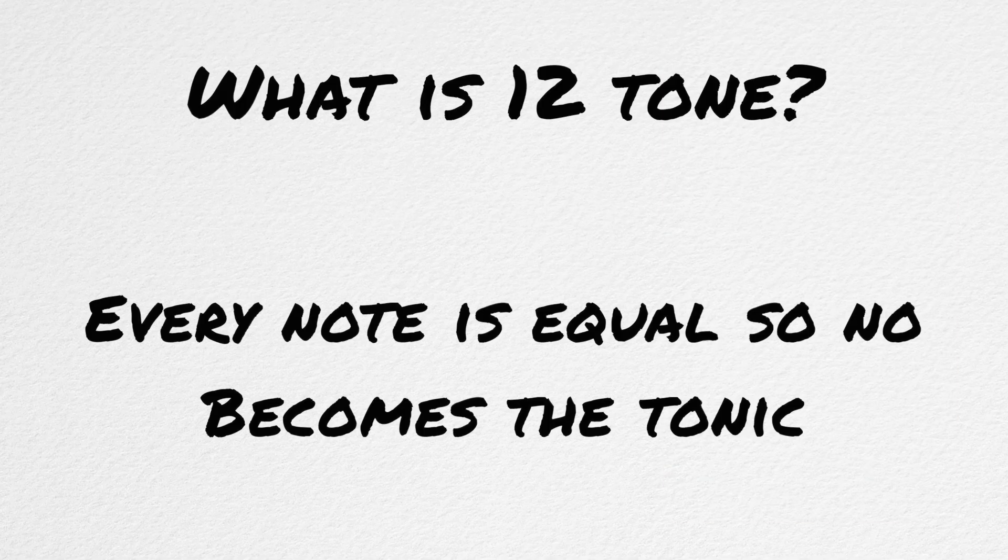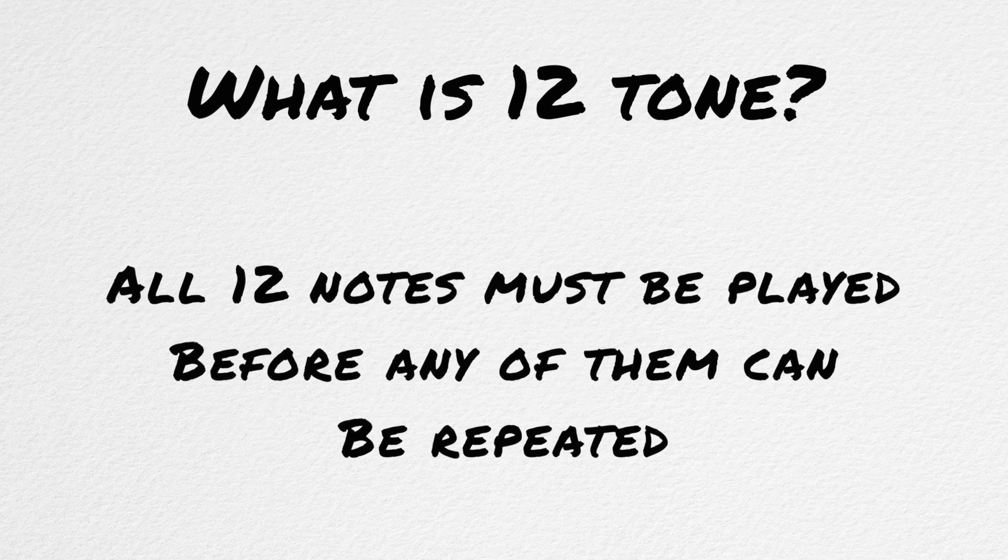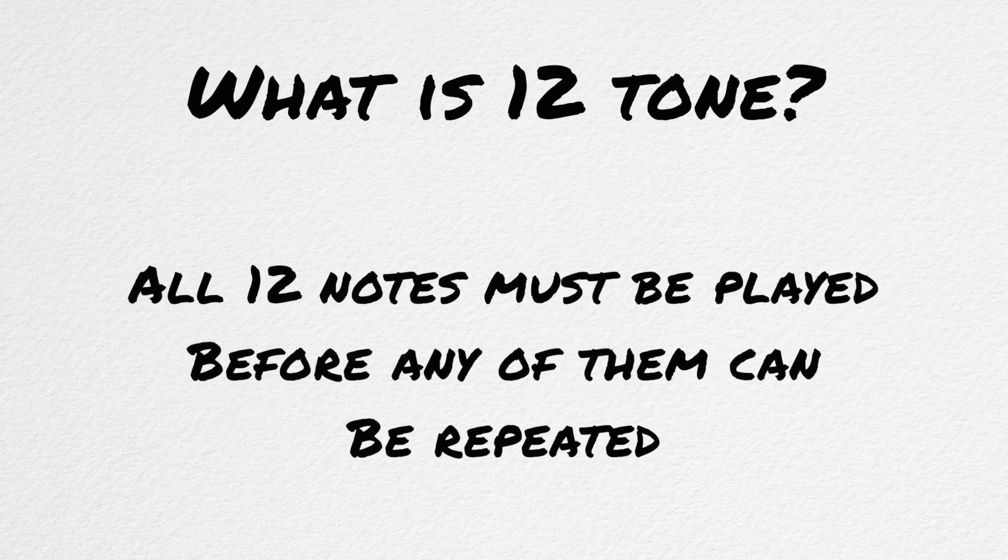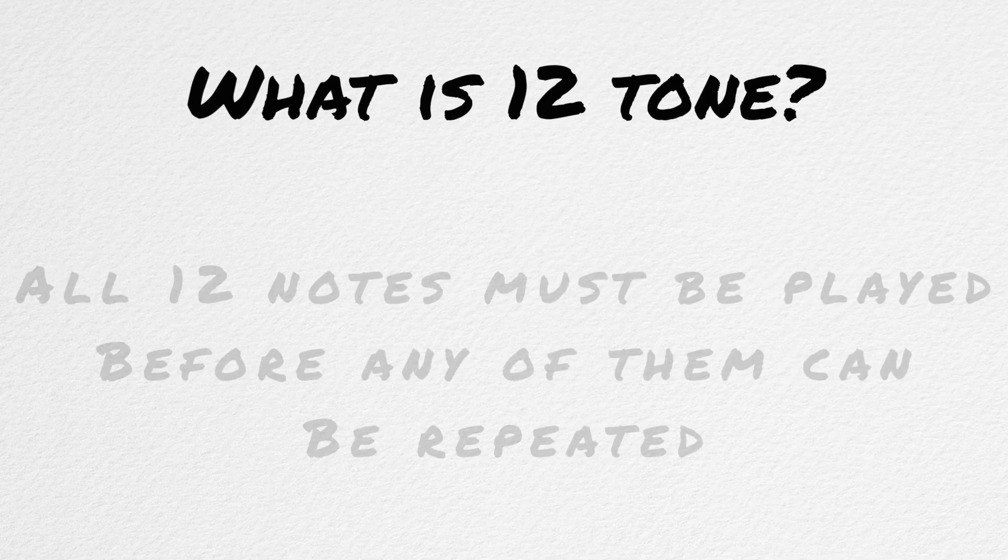What is 12-tone? 12-tone, put simply, is a system that attempts to completely avoid the thought of any one note being more important than the other. This is accomplished by creating a system that does not allow you to repeat any one note again before all 12 of the chromatic pitches have been played. Every note in the chromatic scale has to happen before any note can be played twice, which heavily muddies the ear's sense of what the tonic or the home note is.